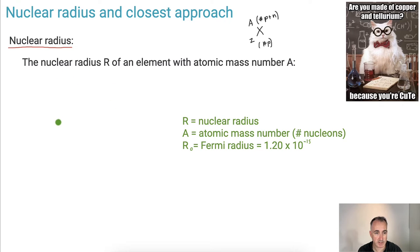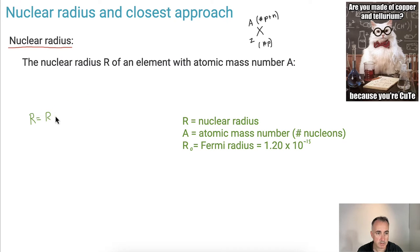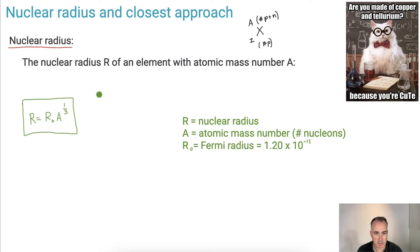The equation is R equals R₀ times A to the power of one third. So what do these different terms mean? Well, R is the nuclear radius, measured in meters.